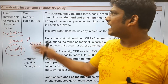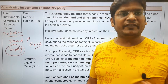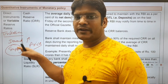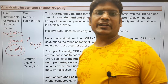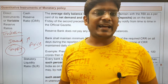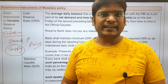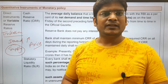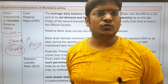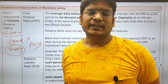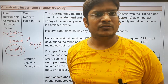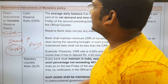RBI's monetary policy target is controlling inflation. Quantitative instruments control the quantity of money supply. If there is less money supply in the economy, people will have less money, there will be less demand for goods, and inflation will come under control.